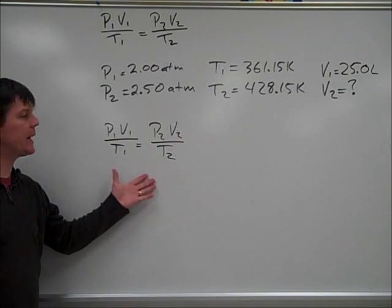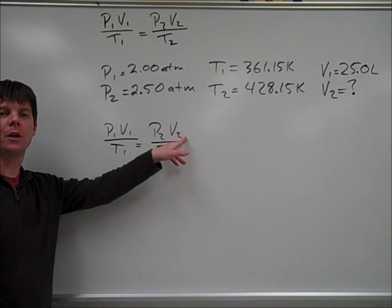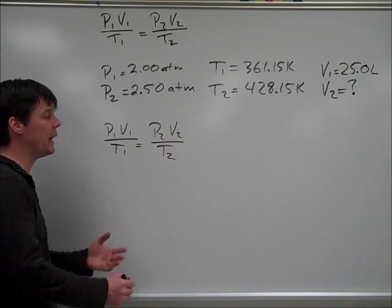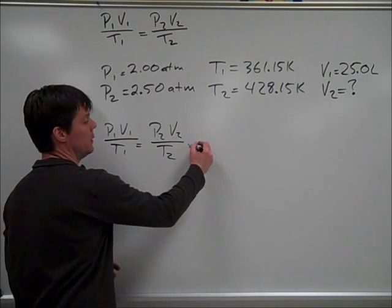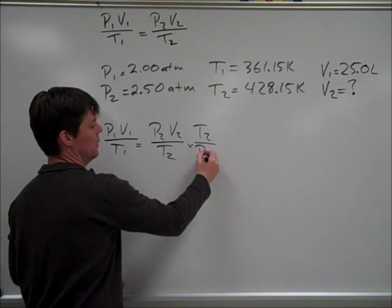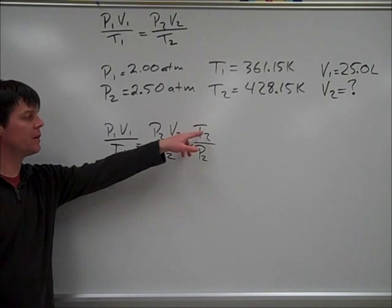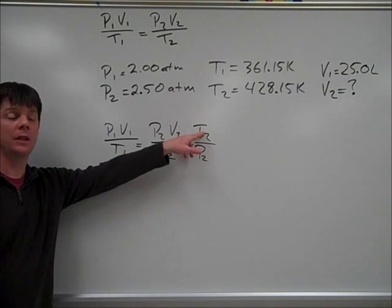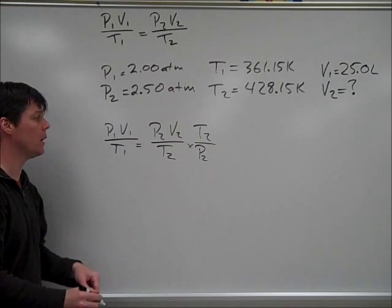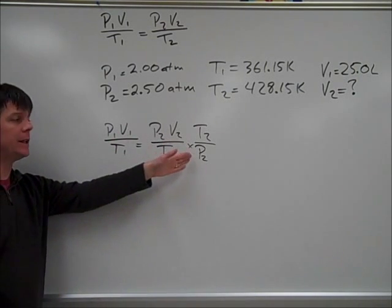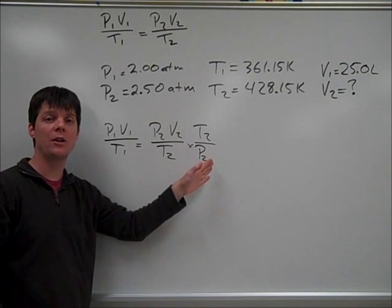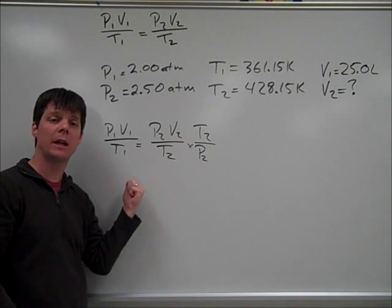I'm using the combined gas law and I'd like to solve for V2. In order to do this, I will need to multiply each fraction by T2 over P2. This allows me to cancel T2 here and here, and it allows me to cancel P2 here and here. Before I do that, I need to keep in mind that whatever I'm doing to this side of the equation, I have to do the same exact thing to the other side.